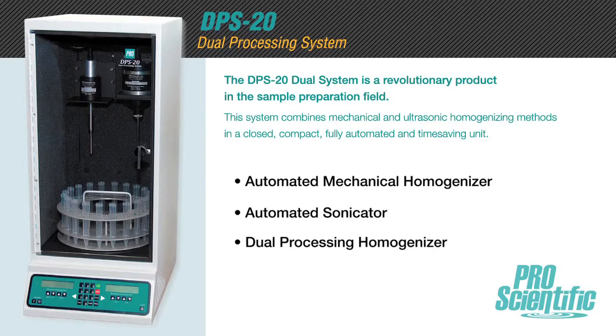DPS20's unique design allows the use of each homogenizing method dependently or independently of each other, which gives it three different configurations: automated mechanical homogenizer, automated sonicator, and dual processing homogenizer.